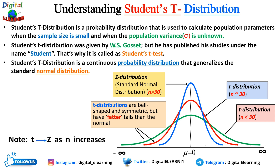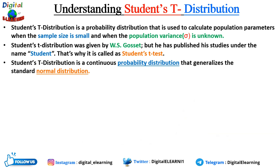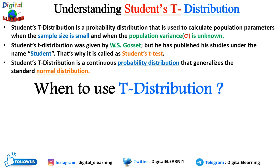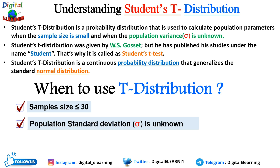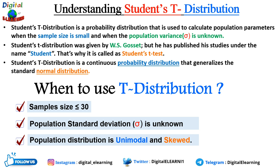As n increases, t approximates the z-distribution. The student t-distribution is used when the sample size is less than or equal to 30. The larger the sample size, the more the t-distribution looks like a normal distribution — in fact, for a sample size larger than 20, the distribution looks almost exactly like the normal distribution. It is also used when the population standard deviation is unknown and when the population distribution is unimodal and skewed.